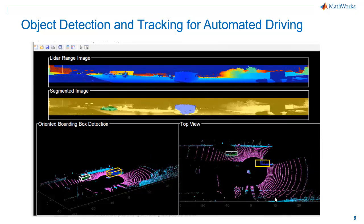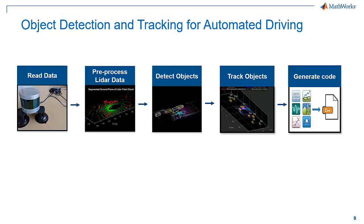Here is how our workflow looks like. We will first read point cloud data into MATLAB and then do some preprocessing. After that, we will detect objects on the preprocessed point cloud data. Then we will track these objects using a JPDA Tracker. Finally, we will create C code for this algorithm to deploy it on our hardware.